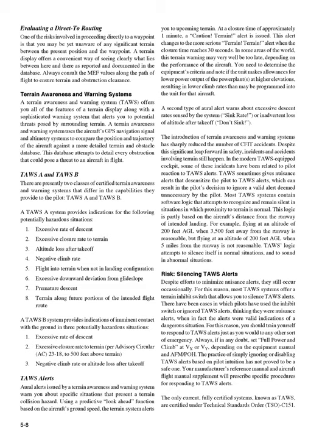TAWS alerts: oral alerts issued by a terrain awareness and warning system warn you about specific situations that present a terrain collision hazard. Using a predictive look-ahead function based on the aircraft's ground speed, the terrain system alerts you to upcoming terrain. At a closure time of approximately 1 minute, a caution — Terrain — alert is issued. This alert changes to the more serious Terrain, Terrain alert when the closure time reaches 30 seconds. In some areas of the world, this terrain warning may very well be too late, depending on the performance of the aircraft.